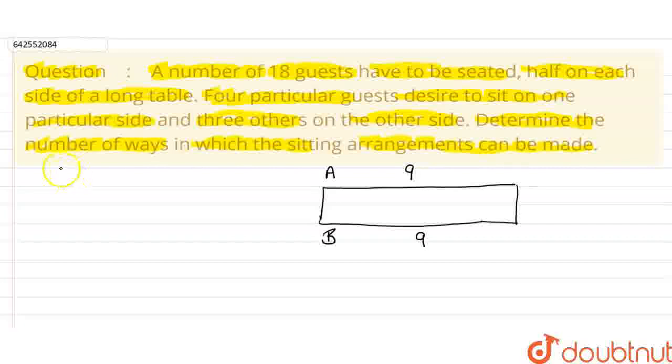So, it is further saying that 4 guests are desiring to sit on one side. Let it be the side A and another 3 guests are desiring to sit on the other side that is B. So, we have a total of 18 guests from this 18.